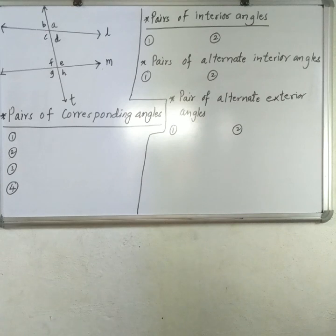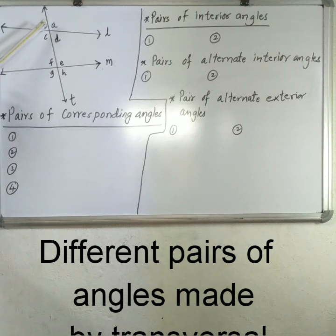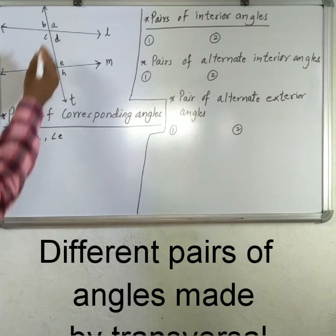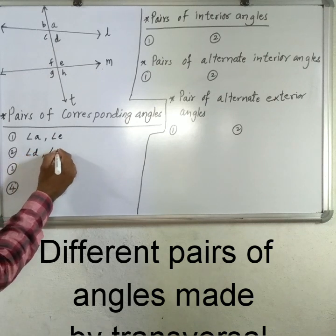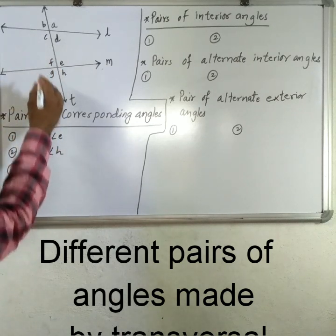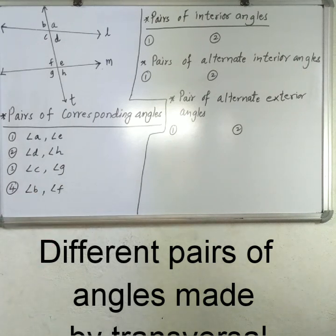What are corresponding angles? If one arm of a pair of angles is on the transversal in the same direction and the other arms are on the same side of the transversal, then the pair is called corresponding angles. There are four pairs: angle A and angle E, angle D and angle H, angle C and angle G, and angle B and angle F.